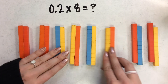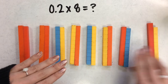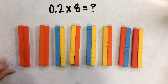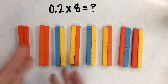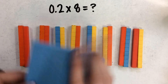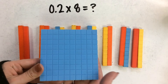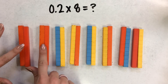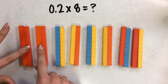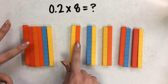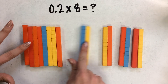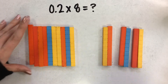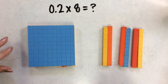So I have eight total groups of tenths. I want to think about how many tenths make one whole — ten tenths make one whole. So I'm going to count these out: two, four, six, eight, ten. And I'm going to trade that out for my one whole.